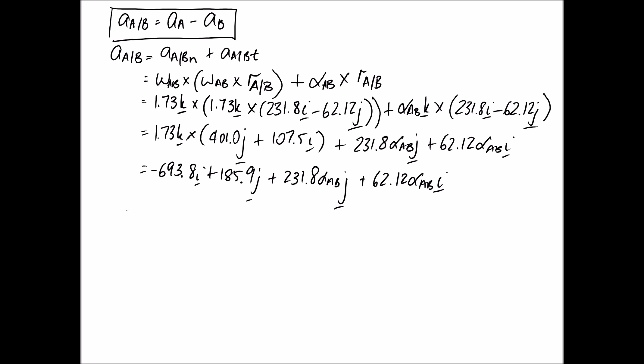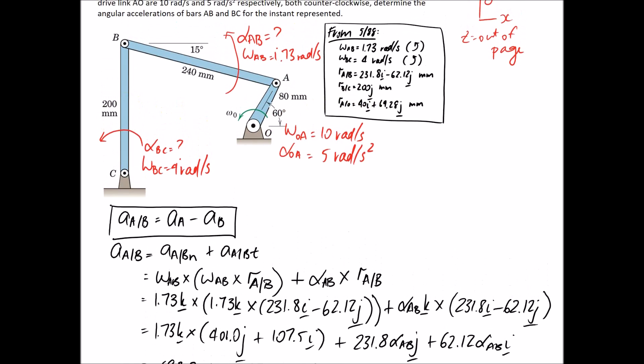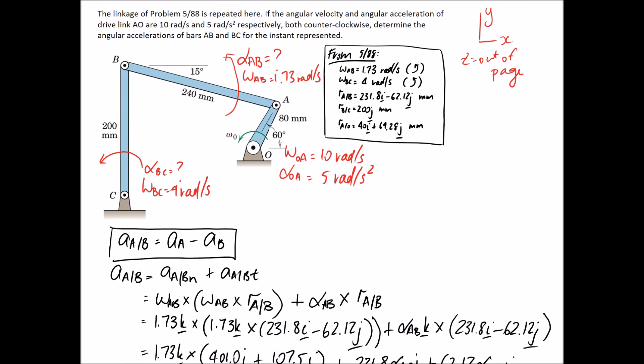So the next thing that we need to look at is the acceleration of point A. We know that point A is connected to point O, which is a fixed point. So we're going to be able to utilize that relationship. And remember this again is a fixed or rigid joint. So this time when we apply the equation, we're going to be looking at omega OA, which is 10 radians per second, and alpha OA, which is 5.